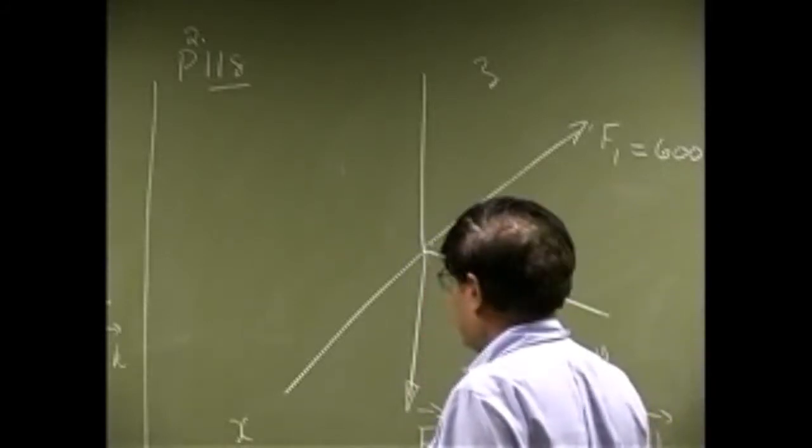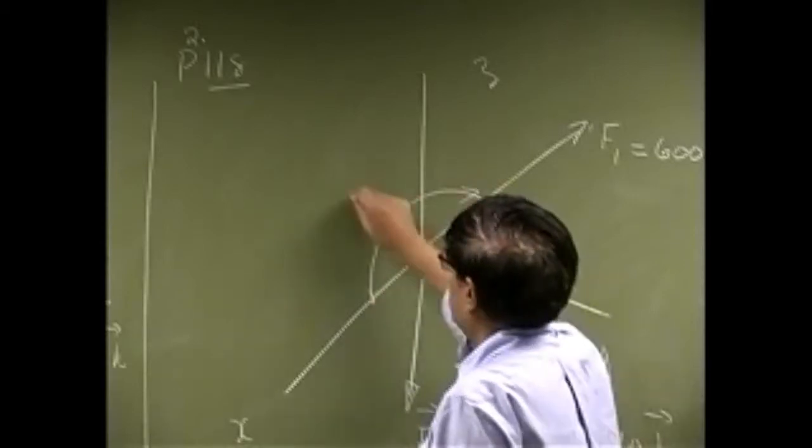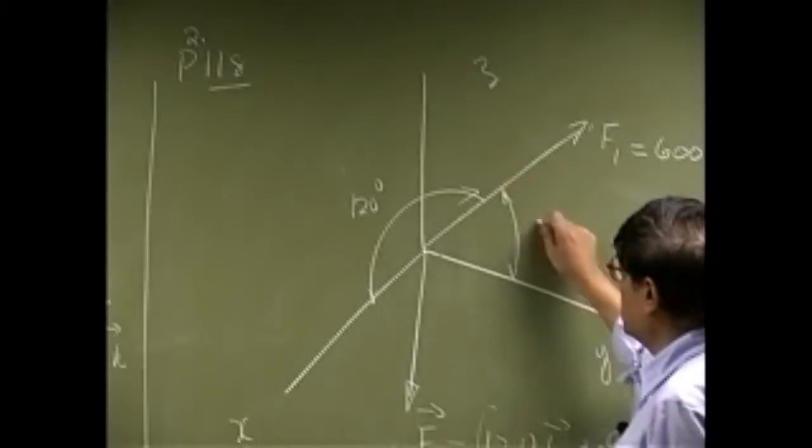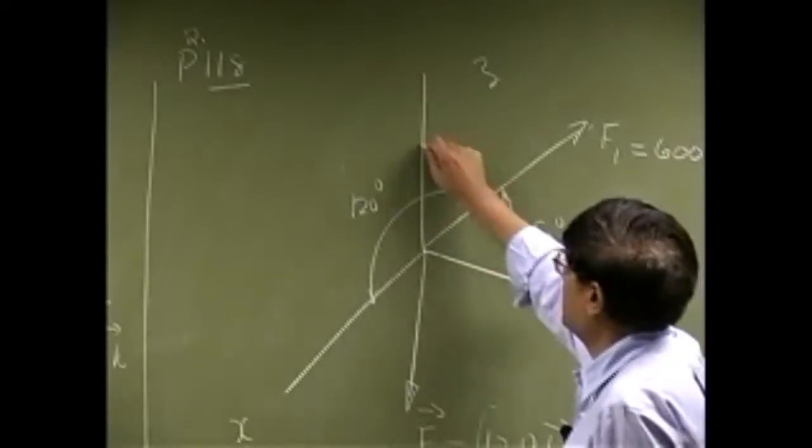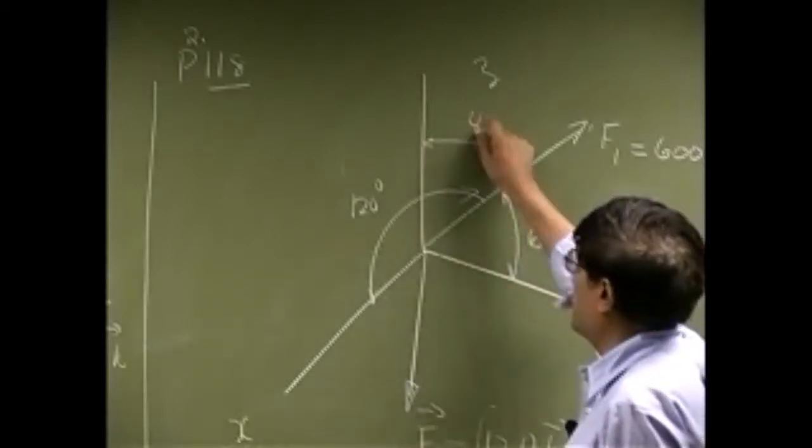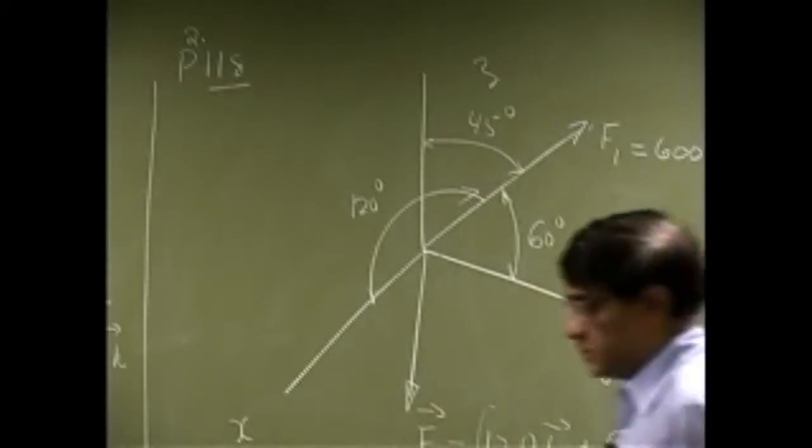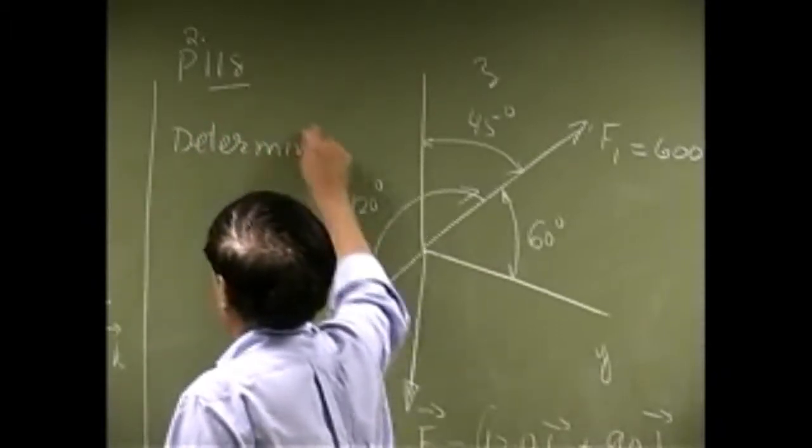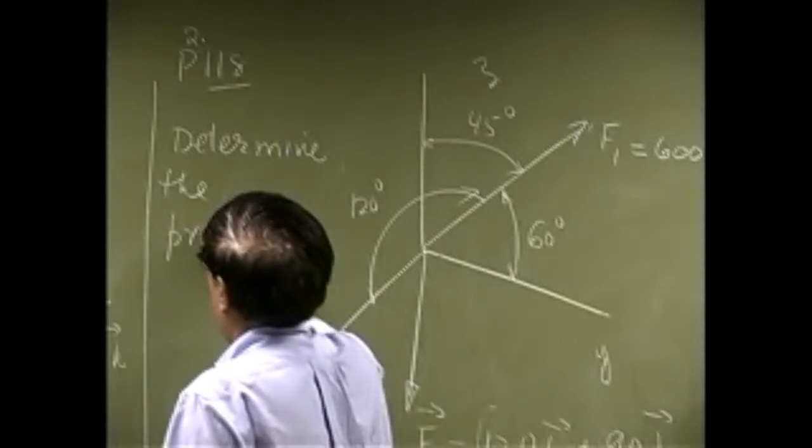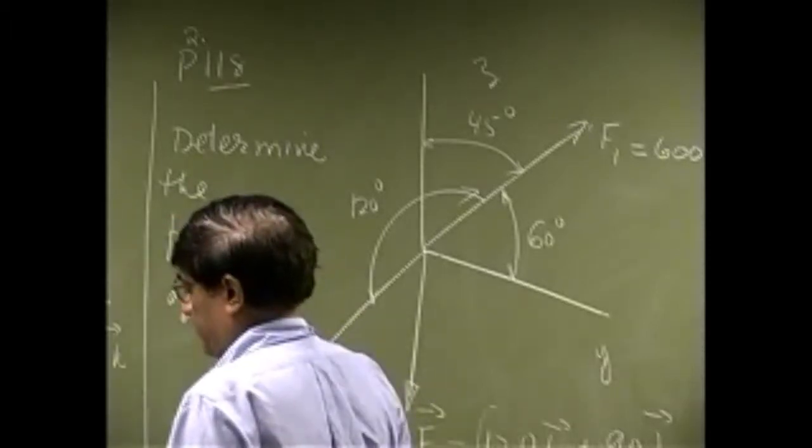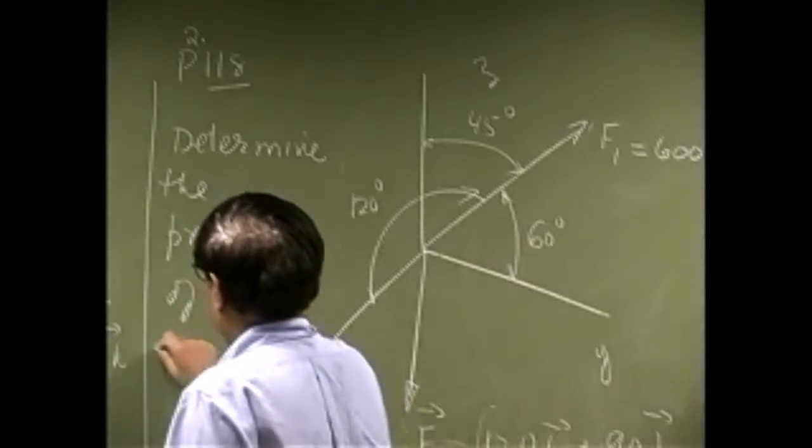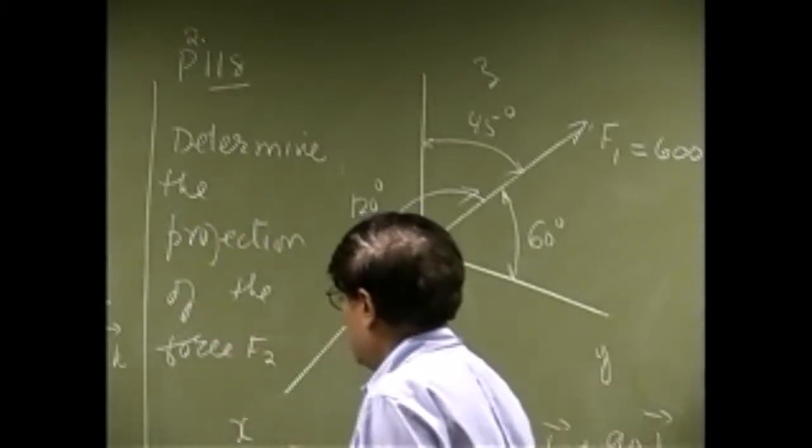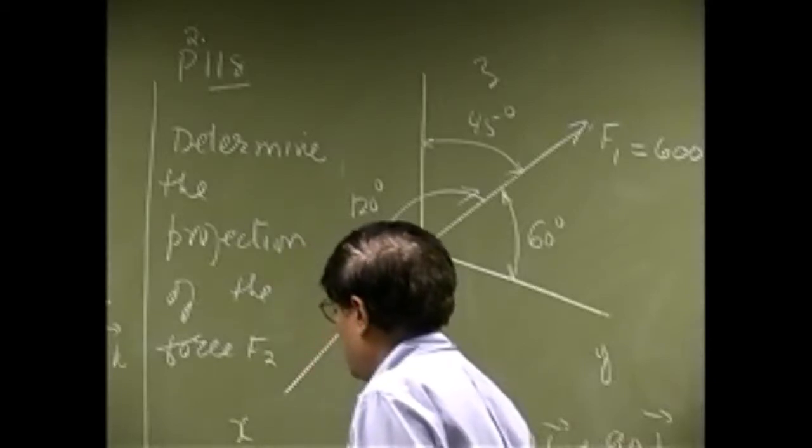Now we know three angles. The angle between the force and x-axis is 120 degrees. The angle between y-axis and the force is 60 degrees. The angle between the force and z-axis is 45 degrees. And the question here is to determine the projection of the force F2 along the force F1.